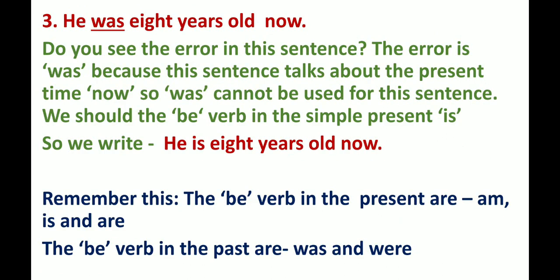Number 3: He was 8 years old now. Do you see the error? The error is 'was', because this sentence talks about the present time — now. So 'was' cannot be used here. We should use the b-verb in the simple present, which is 'is'. So we write: He is 8 years old now.